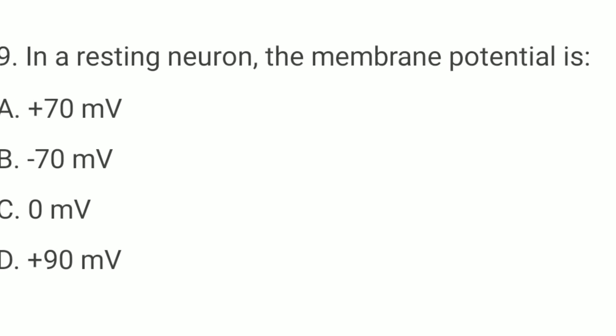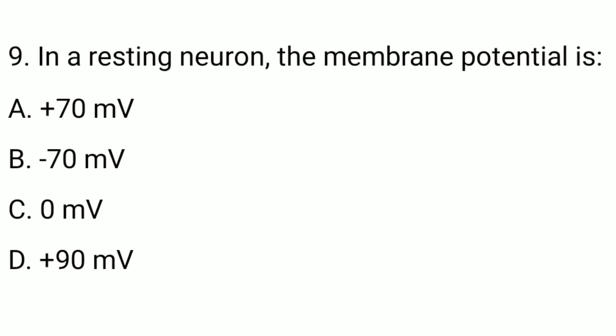Question number nine: at a resting neuron, the membrane potential is? The correct option is option B — minus 70 mV.